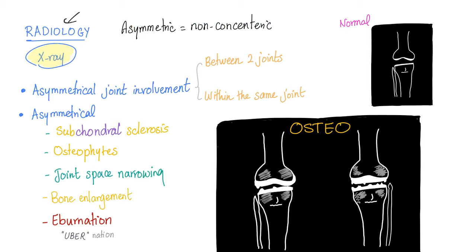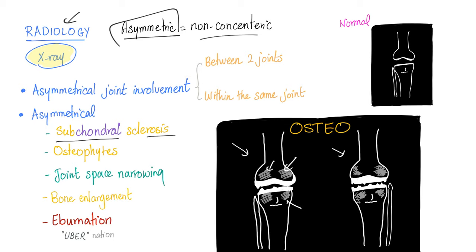For radiology: the joint space narrowing is asymmetric — meaning the two joints are not the same, and even within the same joint it is narrower on one side than the other. We see subchondral sclerosis — hardening of the bone beneath the cartilage. We also see osteophytes, which are bony projections. And joint space narrowing is present because of the osteophytes.